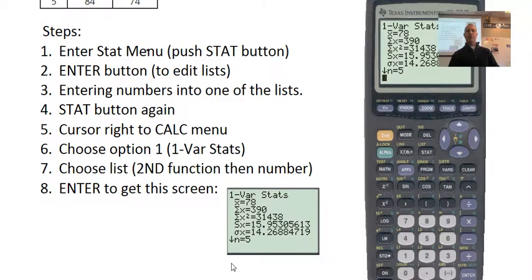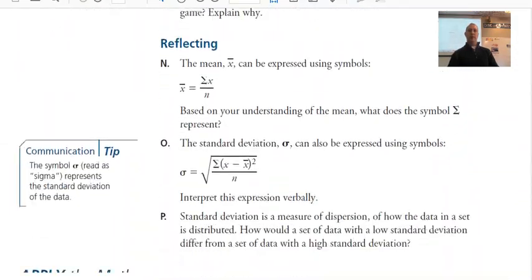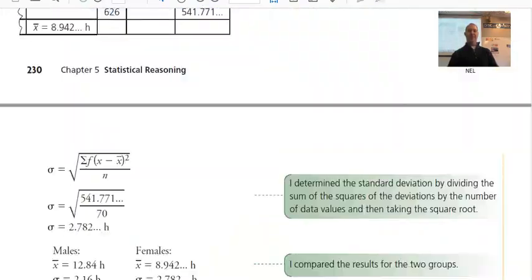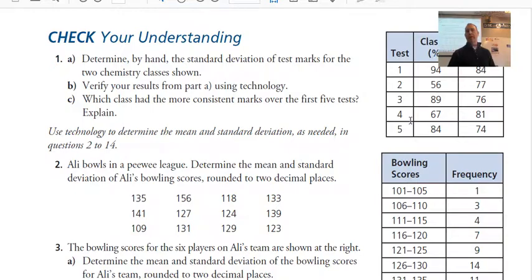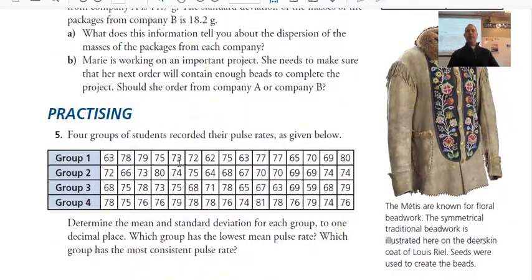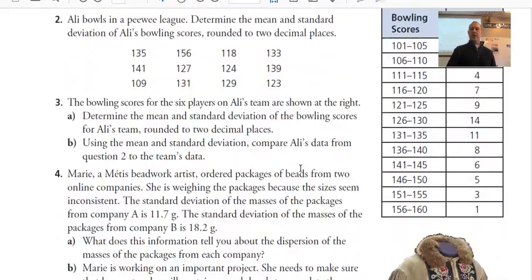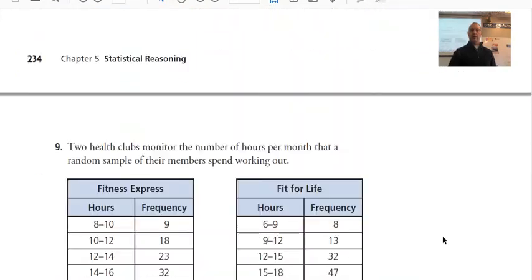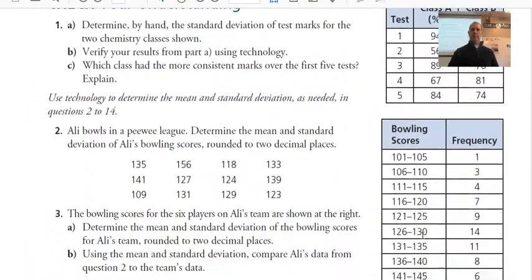I asked you to do numbers one and five with the manual method from the textbook. Number one was the example we already did, so that's a freebie. You should have done number five manually. On a test, do things manually — but if you have time, you can quickly check your answer on the calculator. I'll be giving you more questions that have more data to input, so just be aware of that.